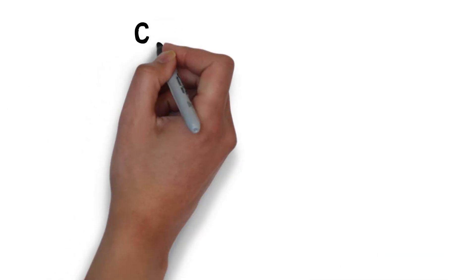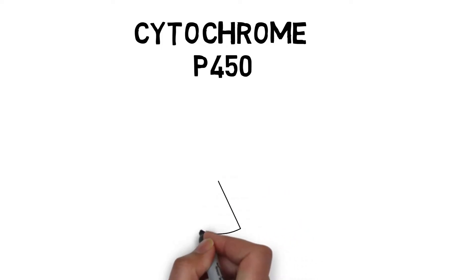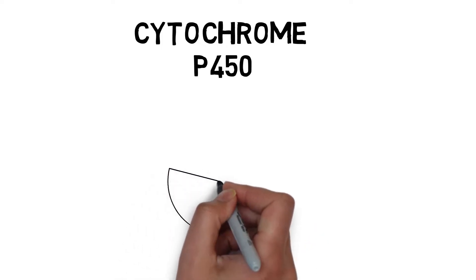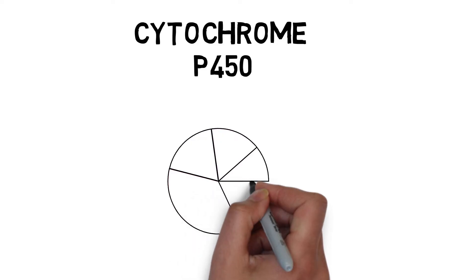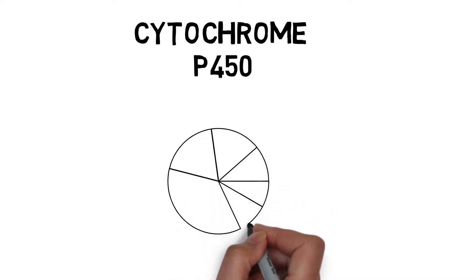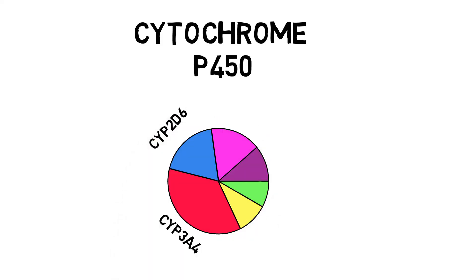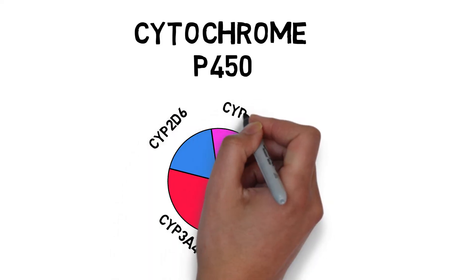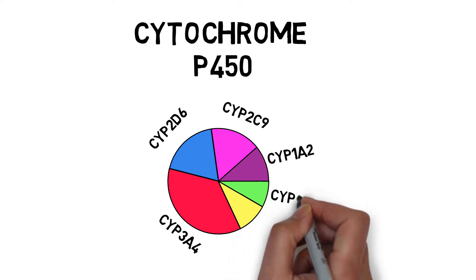Let's focus a bit on cytochrome P450. There are many CYP enzymes, but only 5 are responsible for the vast majority of phase 1 metabolism. These are CYP3A4, CYP2D6, CYP2C9, CYP1A2, and CYP2C19.